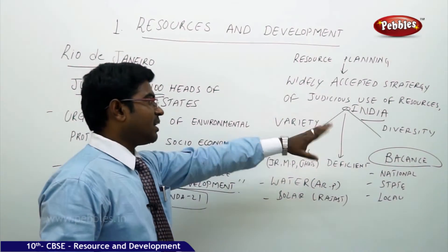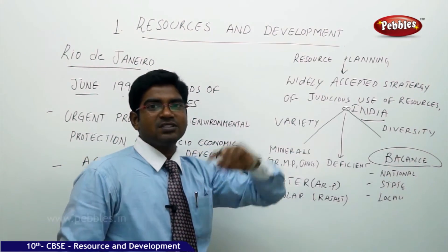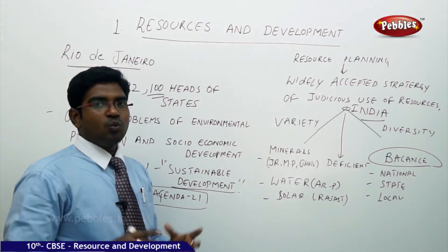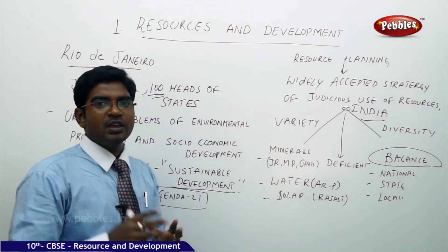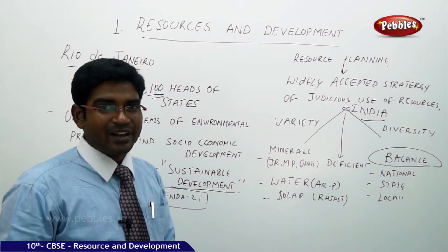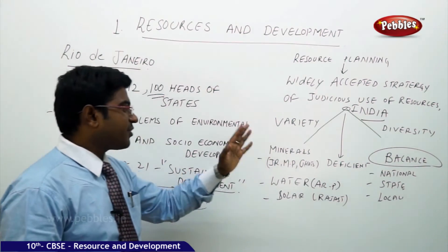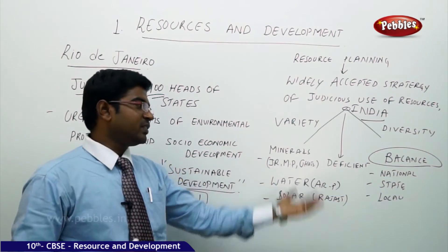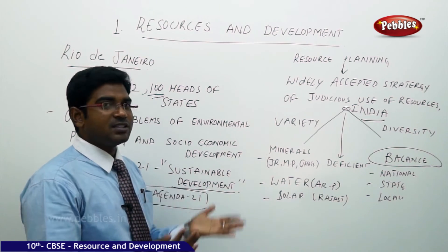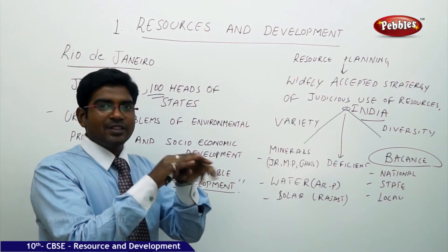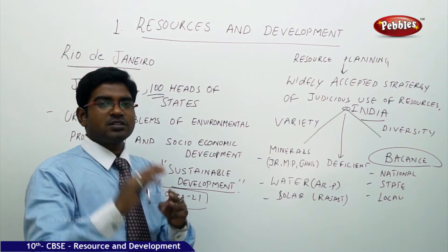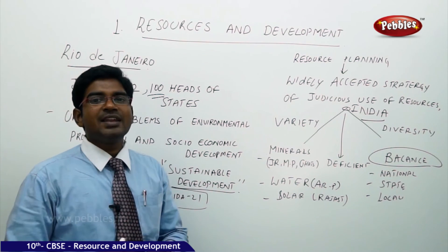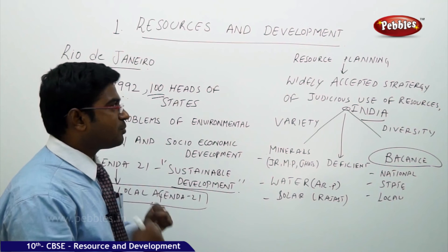Taking the example of India again: we have a variety of resources that are diverse in nature. States like Jharkhand, Madhya Pradesh, and Chhattisgarh have abundant coal; Arunachal Pradesh has abundant water; and Rajasthan has abundant solar energy. Different resources are available at different places, and we need to balance this variety and deficit to fulfill national, state, and local interests — planning from local to state to national level. That's why we need resource planning.